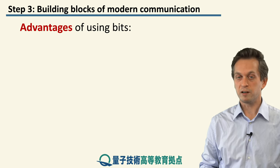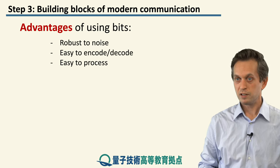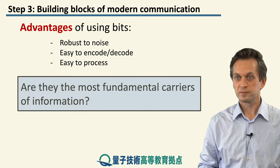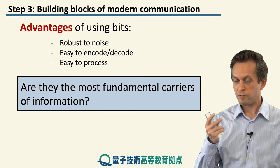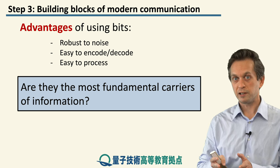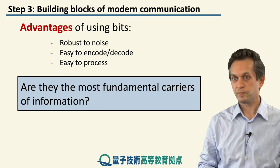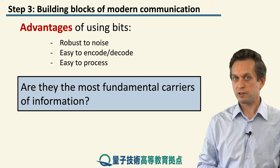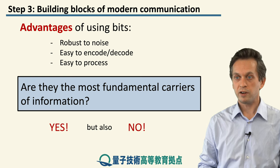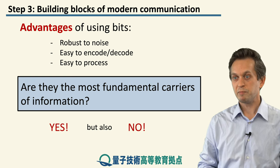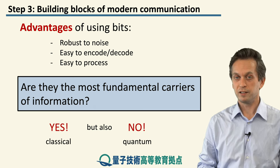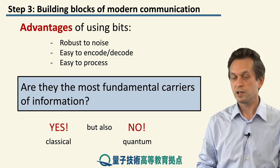The advantages of using bits are: they are very robust to noise, very easy to encode and decode, and very easy to process. We went from representing messages with analog signals to digital signals, and finally determined that we only require two states to represent any signal. Does that mean bits are the most fundamental carriers of information? If you are only considering classical communication, then yes, it is fair to say they are. But if you want to move into quantum communication, then no — they are not the most fundamental, and in the next step we will see what is.